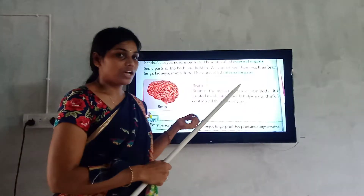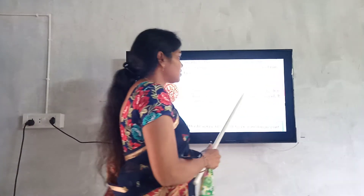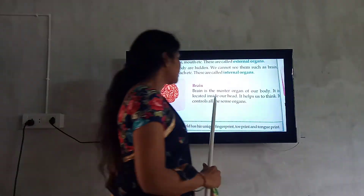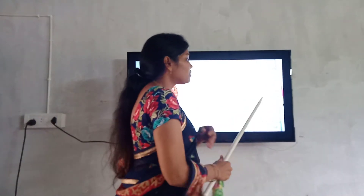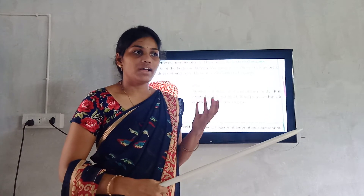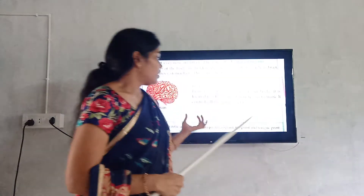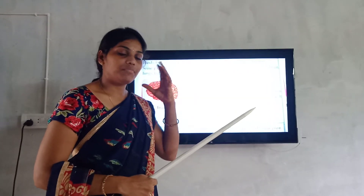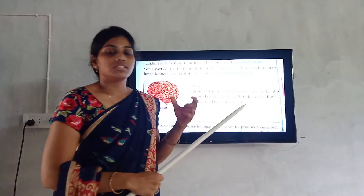Brain is the master organ of our body. It is located inside our head. Brain is the master organ of our body — it helps us to think. Brain helps us to think. It controls all the senses.